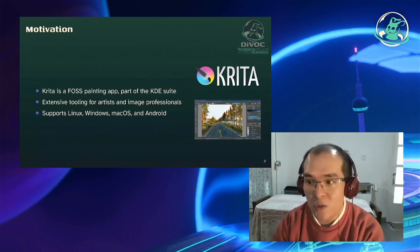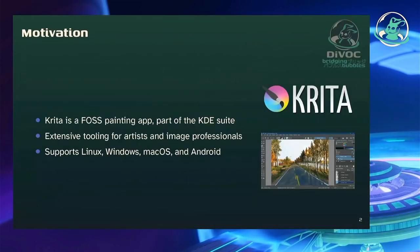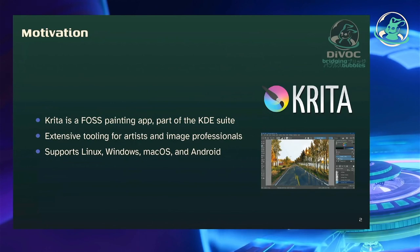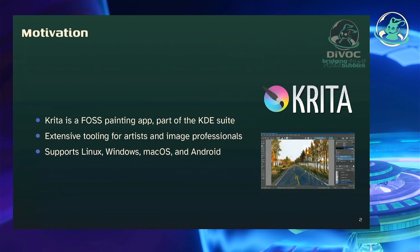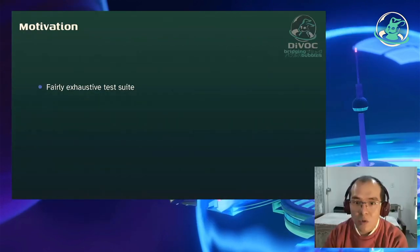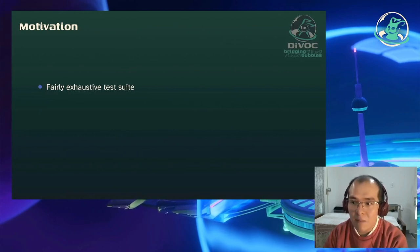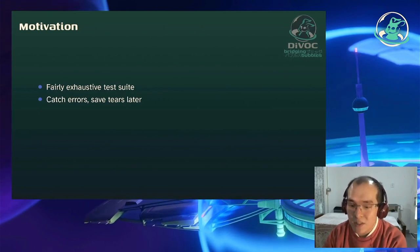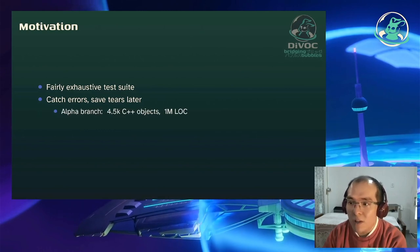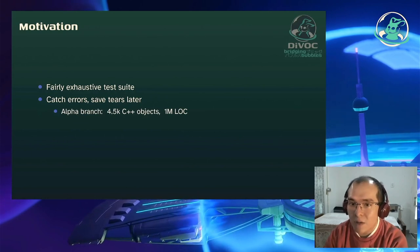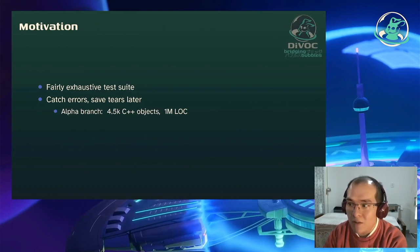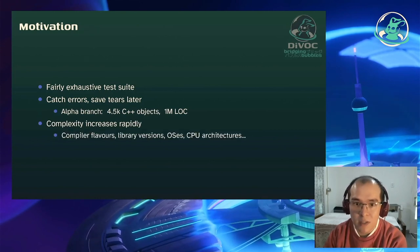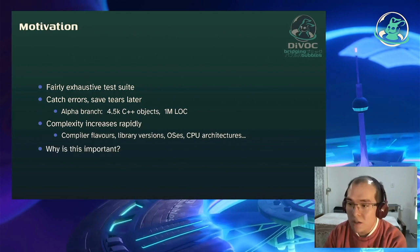Ich arbeite hauptsächlich an Krita, was eine Bildbearbeitung ist in der KDE-Suite. Es ist eine Software für Bildbearbeitungsprofis und wir wollen viele Hintergründe und Systeme unterstützen: Linux, Windows, macOS und Android. Dazu brauchen wir eine sehr große Test-Suite, um möglichst viele Fehler aufzufangen. Unser Hauptbranch hat im Moment über 4.500 C++-Einheiten, was insgesamt fast eine Million Zeilen Code sind. Die Komplexität steigt die ganze Zeit sehr schnell.